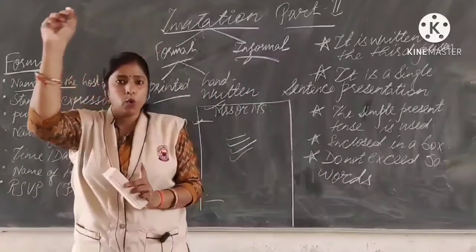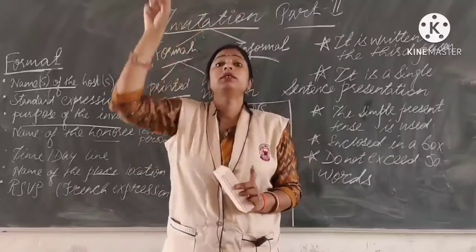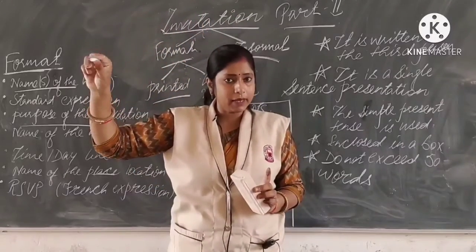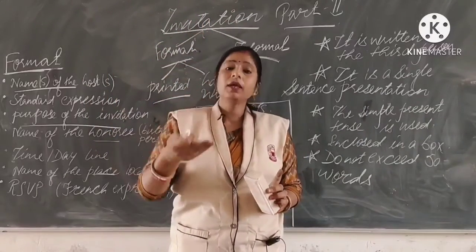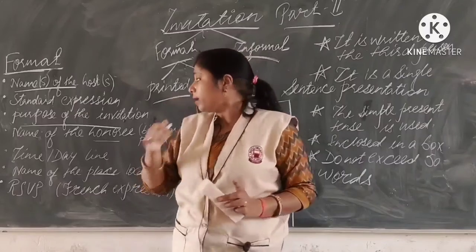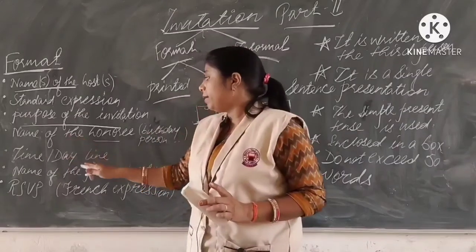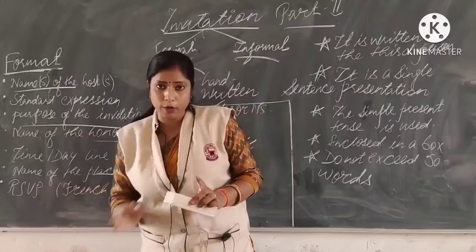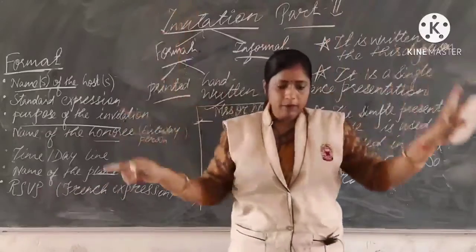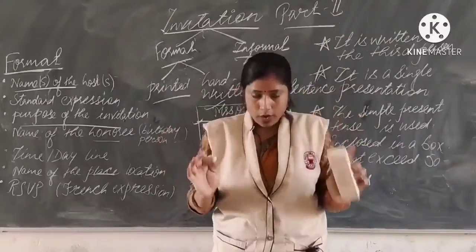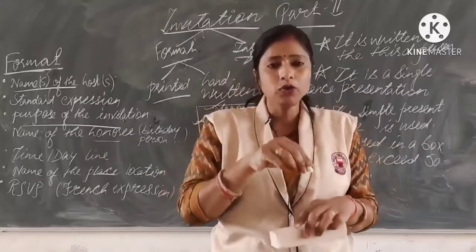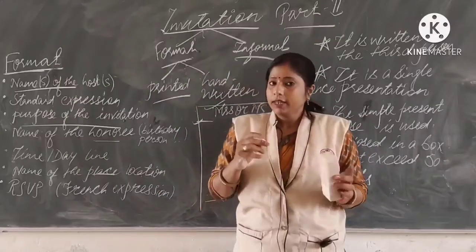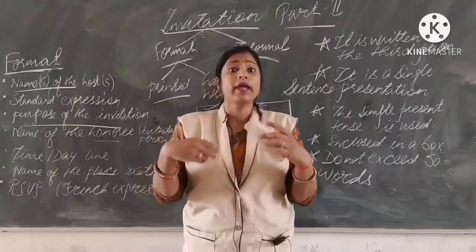To summarize the format: name of the host, then standard expression, then the function, then the name of the honoree, then the timeline — date and time — then the name of the place and RSVP. And we close it in a box. Now we will do some questions related to formal invitation.